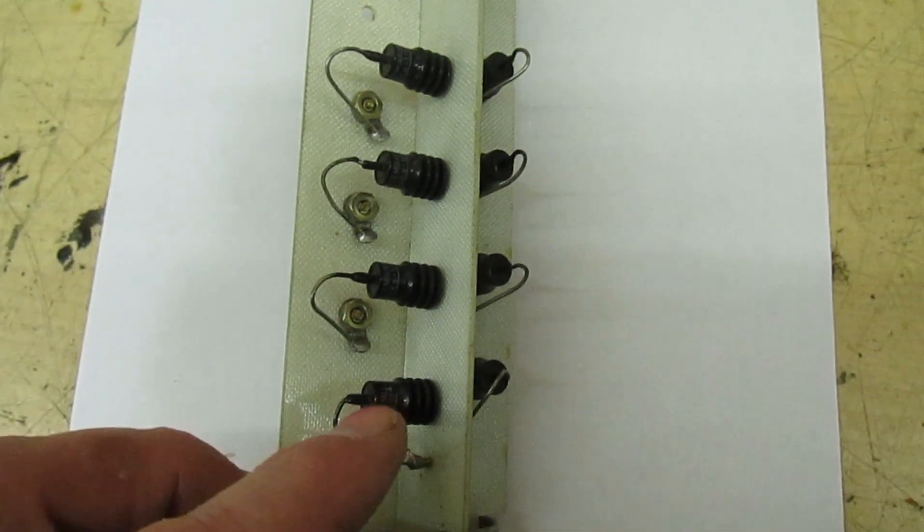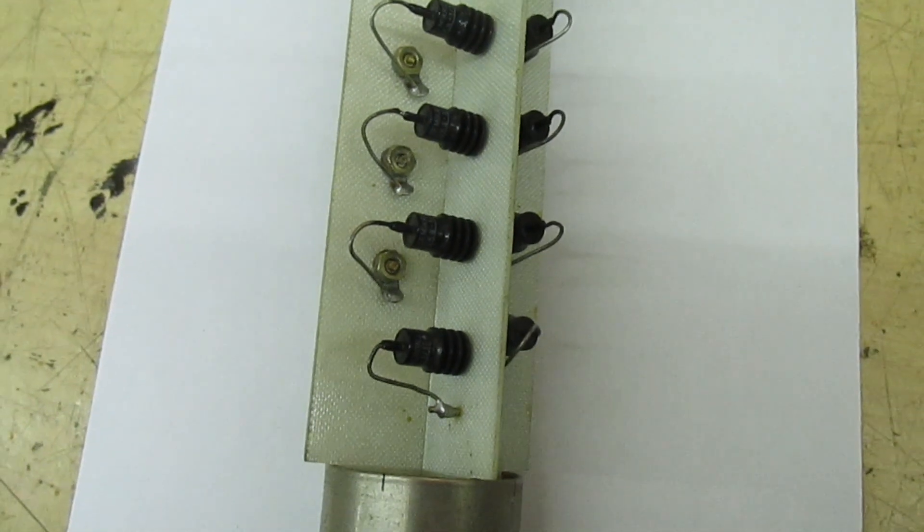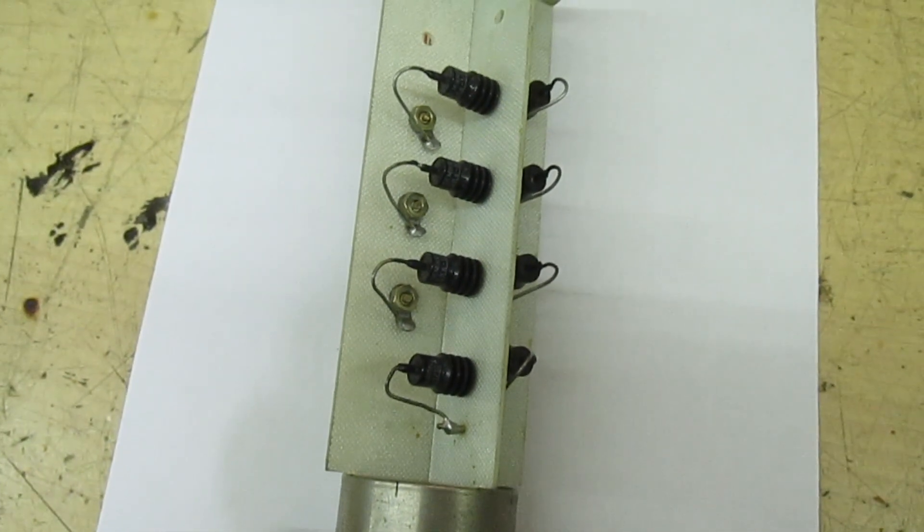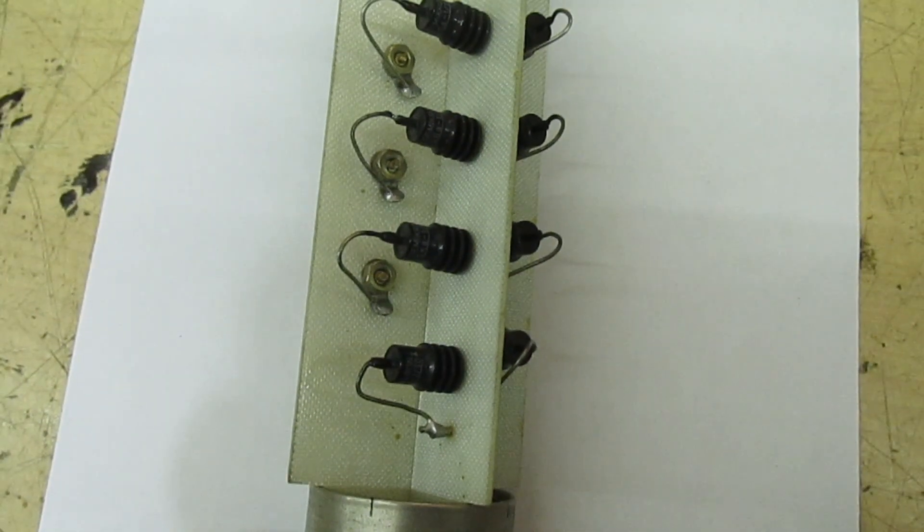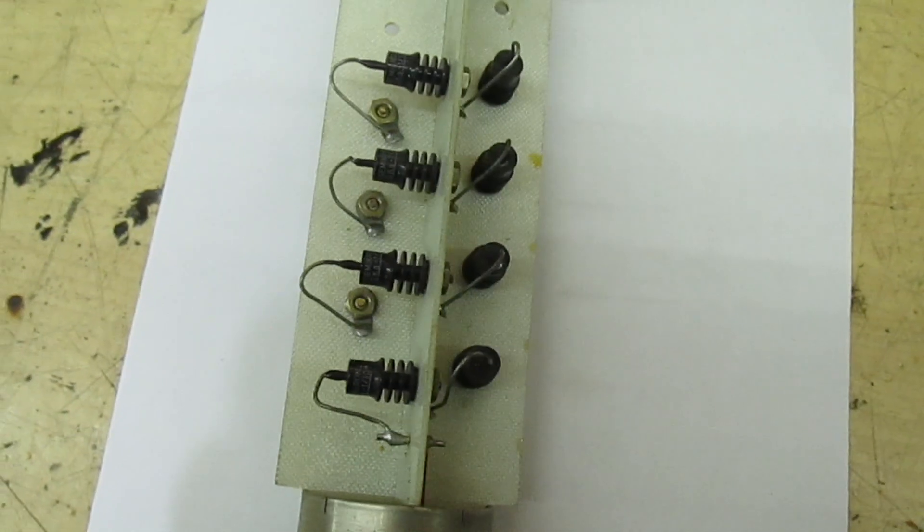Now I've measured the peak inverse voltage on one and it comes out at about 1800 volts. So 14 diodes, that would put this rectifier probably around about 25 kV. So if I turn it over.